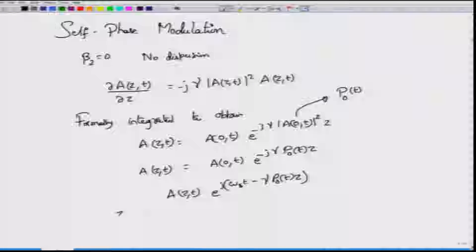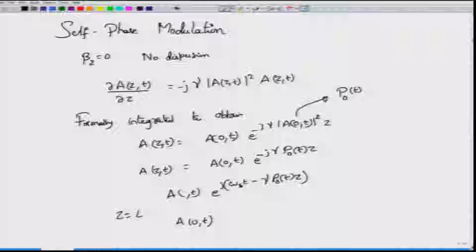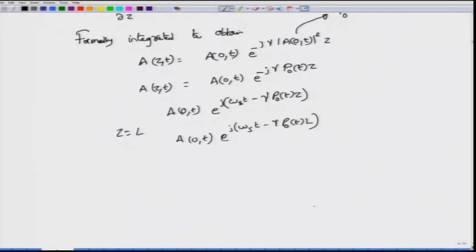If you fix z equal to L, at the fiber output the envelope will be A(0,t) times e to the power j times omega_s t minus gamma P0(t) into L. You have a certain phase factor here, and you know that the instantaneous frequency and the phase are related by the derivative of the phase being equal to the frequency. If phi(t) equals omega_s times t, a linear phase change, then d phi by dt gives you omega_s exactly.